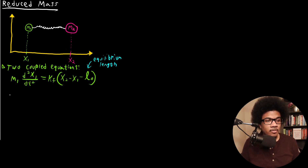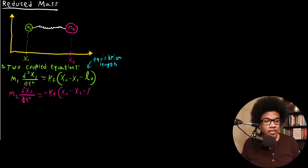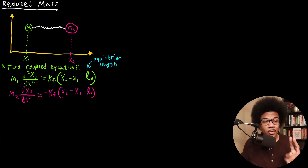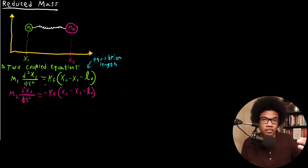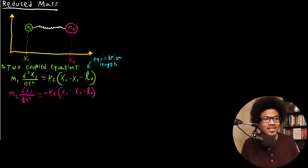The second equation of motion is related: M two times the second derivative of X two equals negative K_F times (X two minus X one minus L-naught). I want to point out two things: first, you have the opposite sign here, because the motion of one mass is going to affect the other in the opposite direction — the force is applied in the opposite direction.